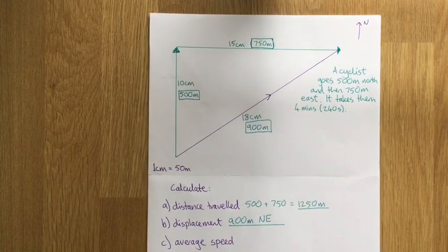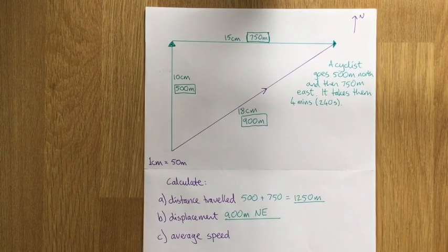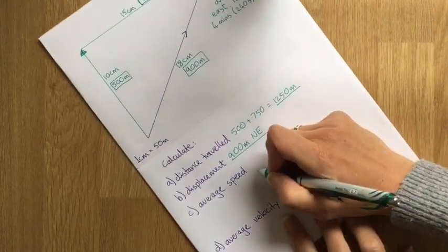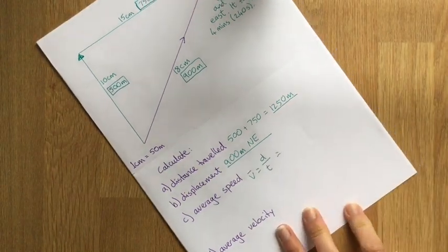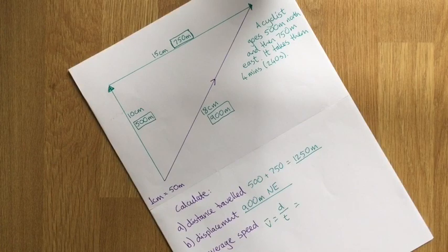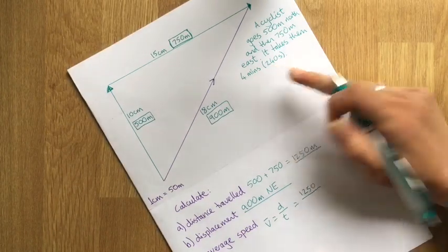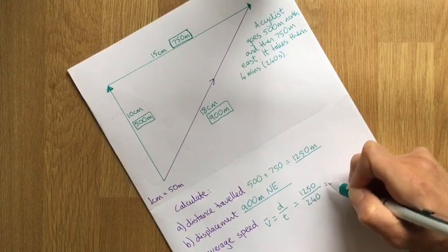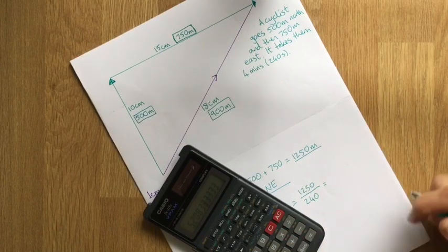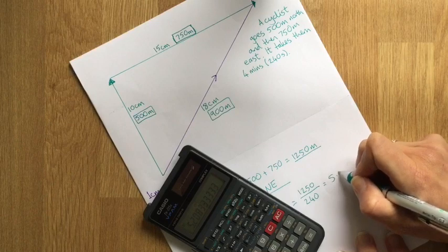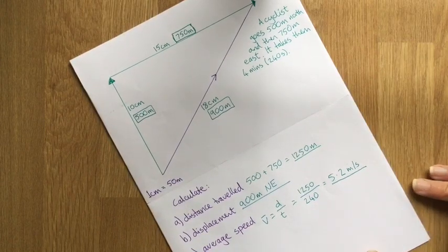Now this is where it gets slightly complicated and this is the bit that's sometimes quite hard to get your head around because it seems a bit odd. Average speed. So average speed, funnily enough, average speed is just distance divided by time. Now when we're working that out, we're working out how far they actually went. So it's distance divided by time, not displacement. So 1,250 divided by the 240 seconds. So 1,250 divided by 240 is equal to 5.2 meters per second. So their average speed was 5.2 meters per second.